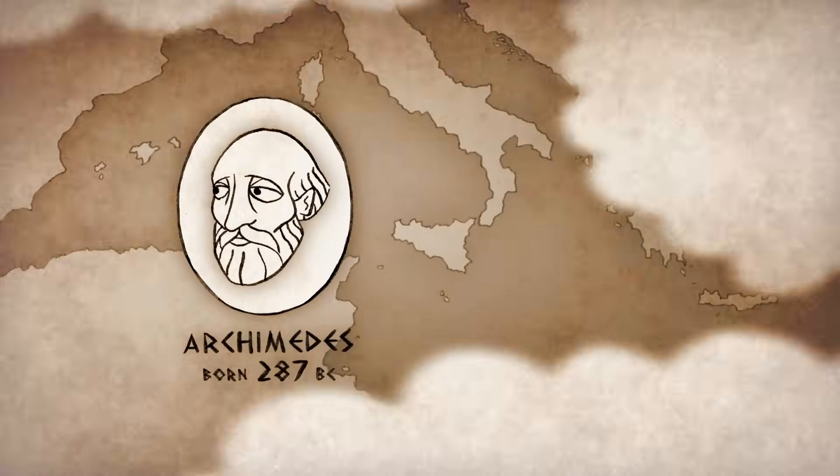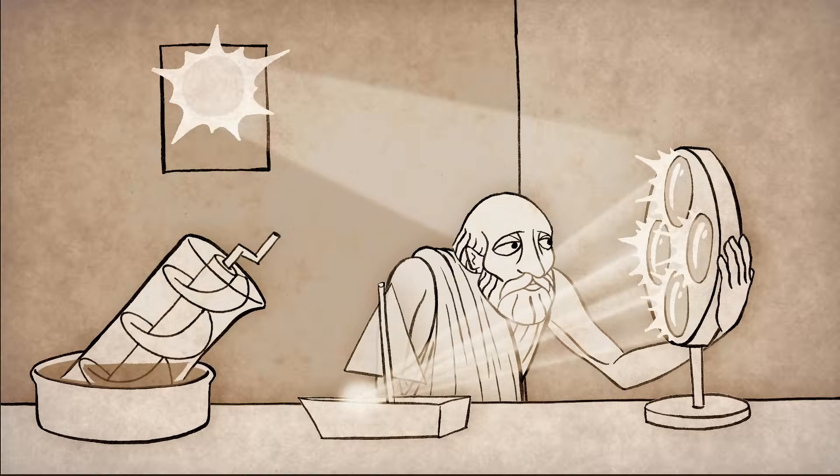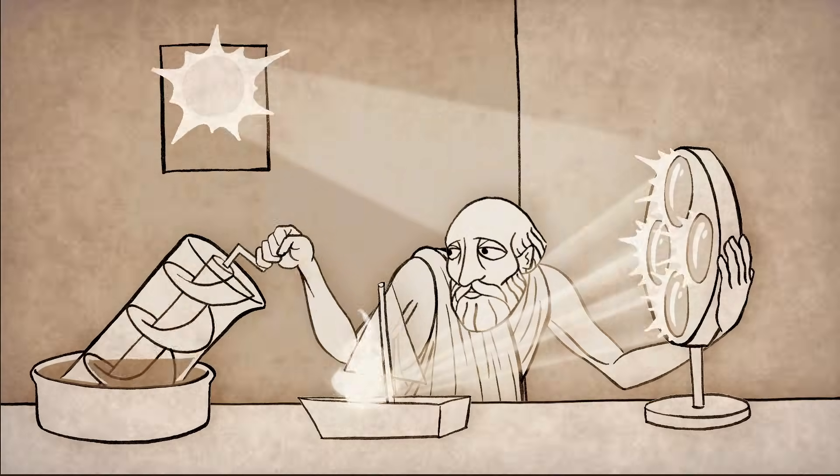Take this story for example. There once was a fellow named Archimedes. He was born in 287 BC in the city of Syracuse in Sicily. He was a Greek mathematician, physicist, engineer, inventor, and astronomer.